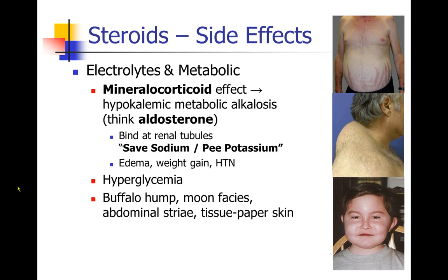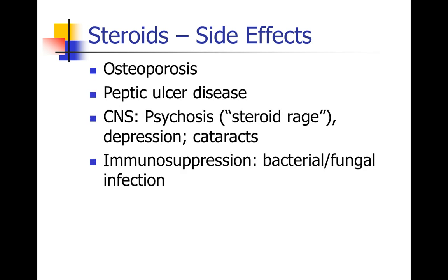Finally, a few comments about the side effects of steroids. Many steroids have a mineralocorticoid effect — think of aldosterone binding at the renal tubules, causing patients to save sodium and excrete potassium, leading to edema, weight gain, and hypertension, and ultimately a hypokalemic metabolic alkalosis. Patients who take steroids can also develop hyperglycemia and many clinical signs including a buffalo hump, moon facies, abdominal striae, and tissue-paper-thin skin. Patients also develop osteoporosis, peptic ulcer disease, psychosis, depression, cataracts, and immunosuppression, leading to increased risk of bacterial and fungal infection.